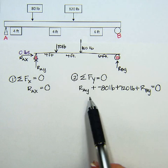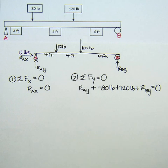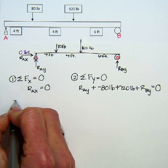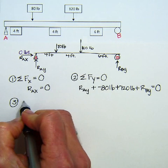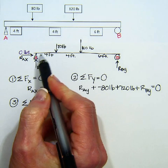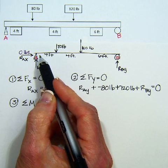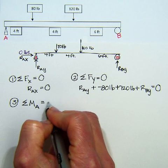Now I'm noticing that I have two different variables here. So in mathematics when we have two variables it takes two equations to solve it. So that's why we need this third step, which is the sum of the moments about A. And we always pick the pin because that's the part that's going to be static. It's going to be held. The sum of the moments have to equal 0.